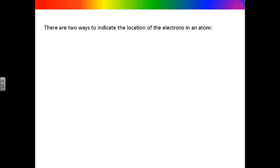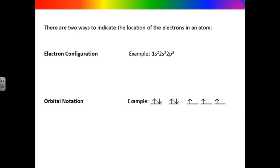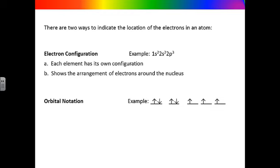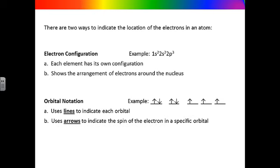There are two ways to indicate the location of the electrons in an atom: electron configuration and orbital notation. Each neutral element has its own unique electron configuration, which can be used to identify which element you have. The configuration shown is for nitrogen. This configuration shows the arrangement of electrons around the nucleus. Orbital notation is more like a drawing that indicates the specific orbitals the electrons are located in. Lines are used to indicate each orbital, and arrows are used to indicate the electrons. The direction of the arrow indicates the spin of each individual electron.